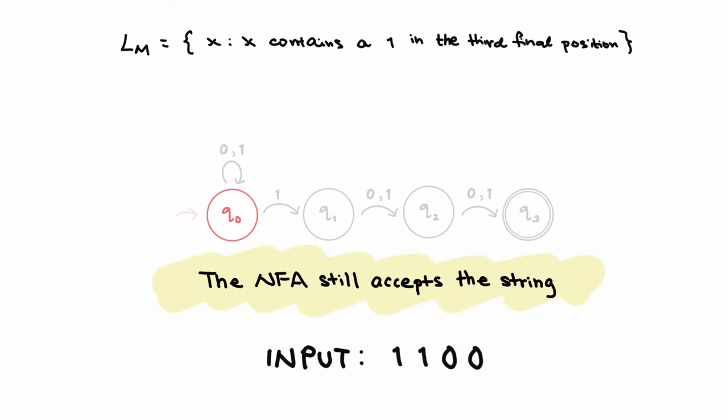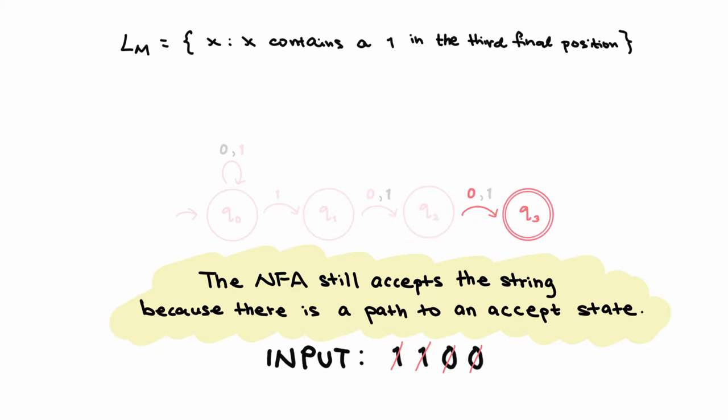However, the NFA accepts a string as long as there is at least one path to an accept state. So although there is a path that would reject the string, the NFA still accepts the string because there is another path to an accept state.